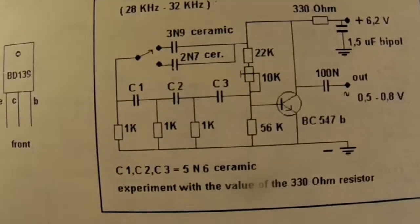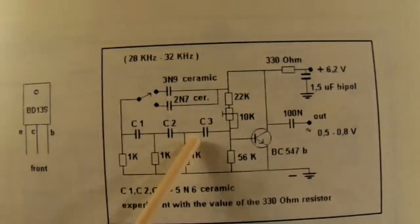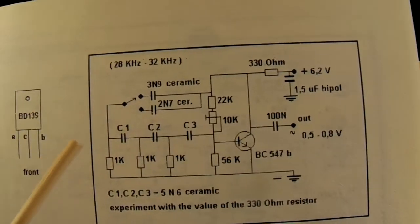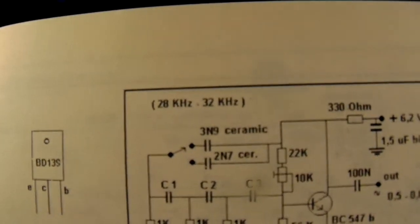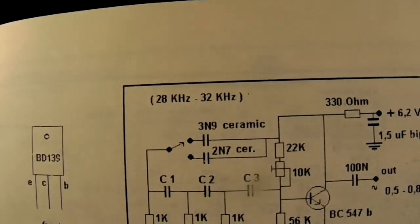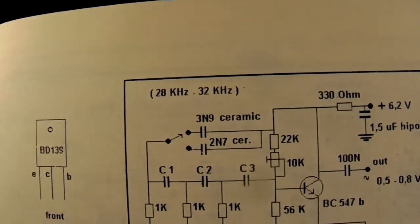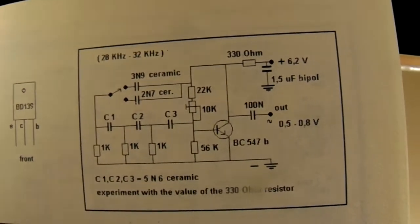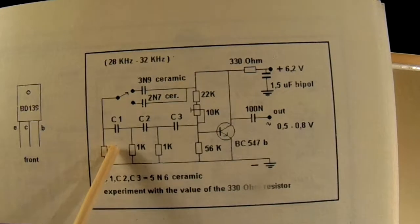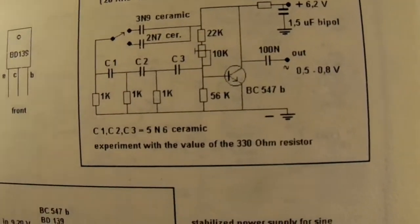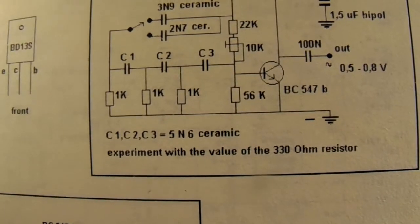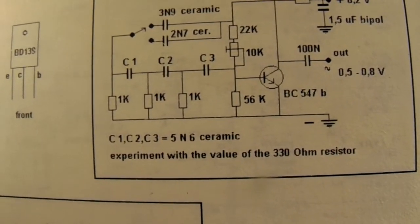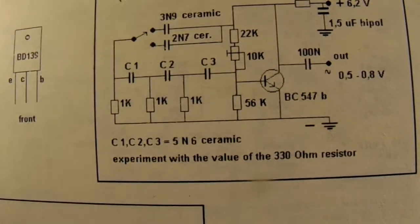Here is the phase shifting network that shifts the phase. For higher frequencies you need ceramic capacitors. All these capacitors here have to be ceramic, and here you see the value 5N6, that means five thousand and six hundred picofarad.